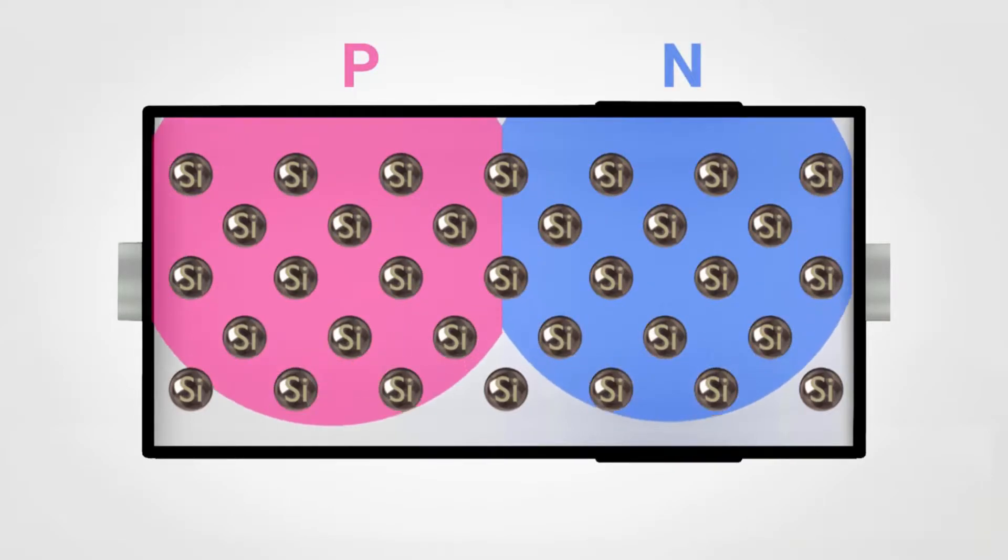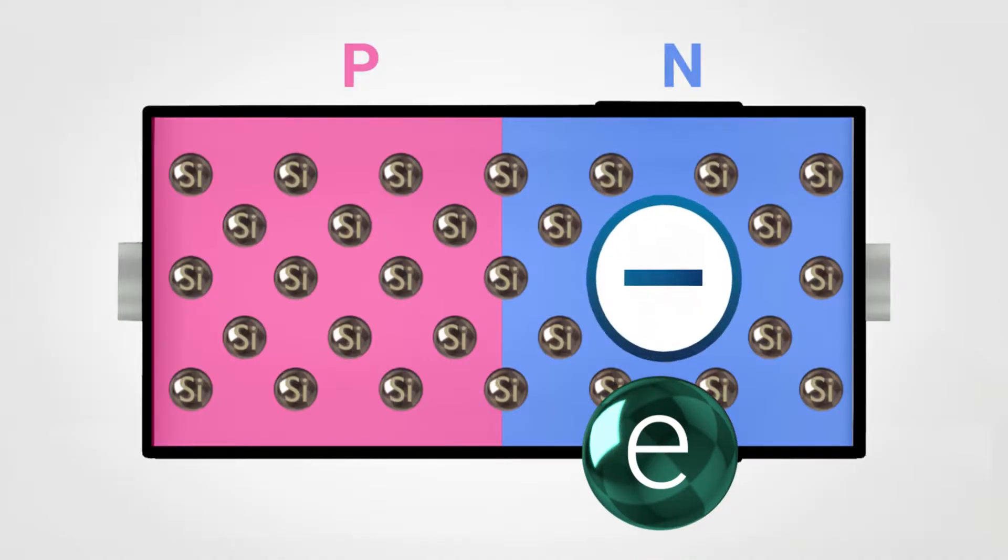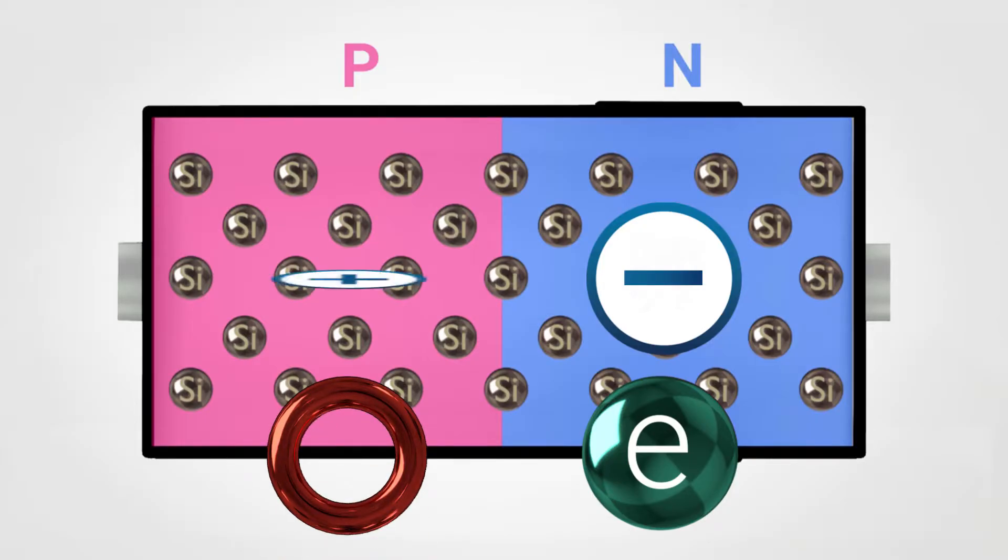One part is doped in order to obtain an excess of electrons and therefore it is negatively charged, while the other is doped in order to obtain an excess of holes and is therefore positively charged.